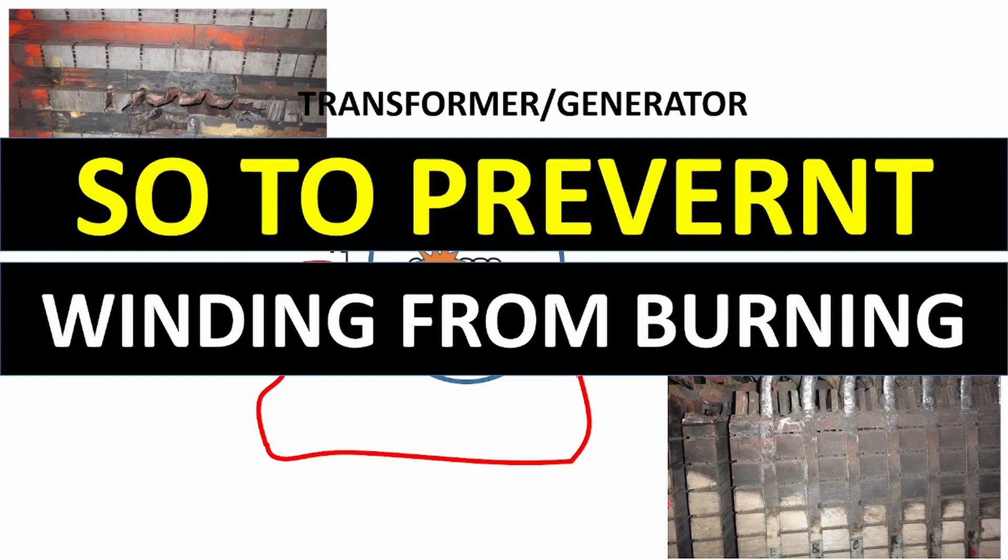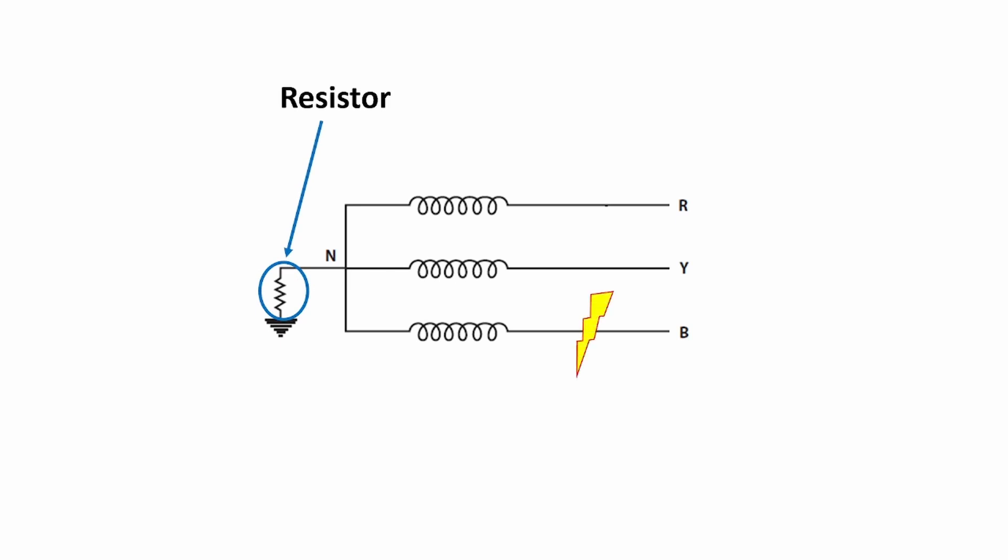Now let's discuss how NGR protects equipment. Suppose this is the equipment and its neutral is grounded with a resistor. When an earth fault occurs, fault current will flow from the fault point to ground point. Now this time,